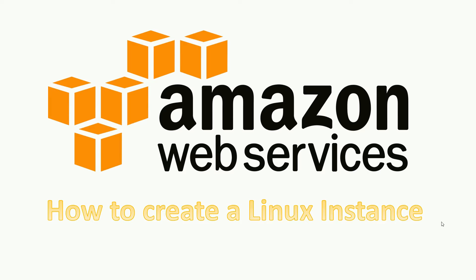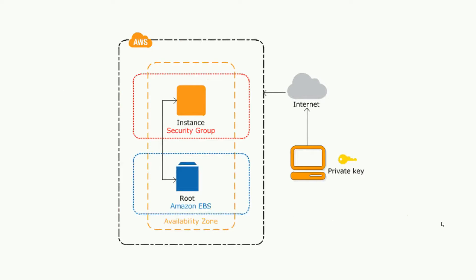Before we go and create an instance, I want to bring up this topic: whenever you log onto a machine or computer, if you have a username and password set up, you always need those credentials to log into a secured computer. For a Linux instance on Amazon Web Services, you have a username but you don't have a password — you have a private key.